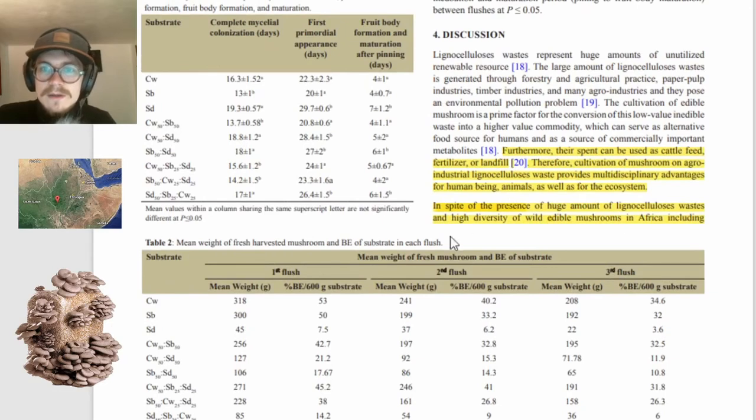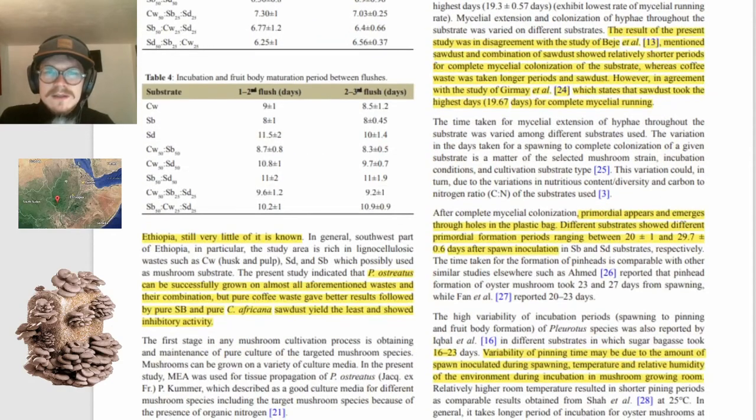So in spite of the presence of huge amount of lignocellulose wastes and high diversity of wild edible mushrooms in Africa, oh, maybe Ethiopia is the mecca of mushrooms. Maybe I should be going there to look for the diversity of wild edible mushrooms. That actually sounds like a lot of fun. Ethiopia still very little is known. But Pleurotus ostreatus can be successfully grown on almost all aforementioned wastes and their combination. But pure coffee waste gave better results, followed by pure sugarcane and pure sawdust that showed the least inhibitory activity.